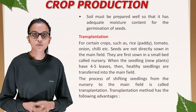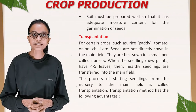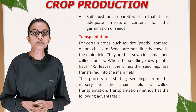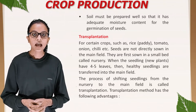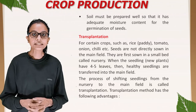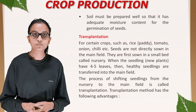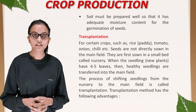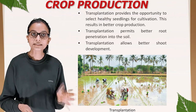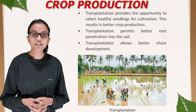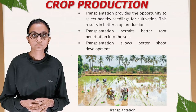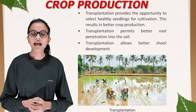Transplantation: for certain crops such as rice, paddy, tomato, onion, and chili, seeds are not directly sown in the main field. They are first sown in a small bed called a nursery. When seedlings have 4–5 leaves, healthy seedlings are transferred into the main field. This process is called transplantation. Advantages: it provides the opportunity to select healthy seedlings, resulting in better crop production; it permits better root penetration into the soil; and it allows better shoot development.